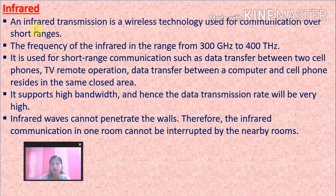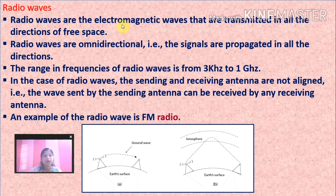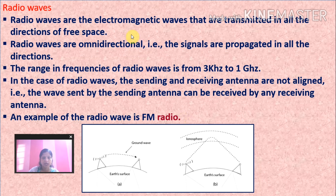Radio waves are electromagnetic waves transmitted in all directions of free space. Radio waves are omnidirectional, meaning signals propagate in all directions. The frequency range of radio waves is from 3 kHz to 1 GHz. In radio waves, sending and receiving antennas do not need to be aligned — the wave sent by the sending antenna can be received by any receiving antenna. An example is FM radio.